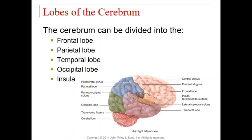Keep it simple: frontal lobe handles motor, parietal handles most sensory, temporal lobe handles specifically auditory, and occipital handles specifically visual information.